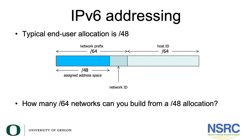What does a typical end-user allocation in IPv6 addressing look like? The typical end-user allocation is a /48. You have 128 bits for the IPv6 number, preserving 64 bits for the network prefix — as all addresses are /64 — and 64 bits for the host. So the question is: how many /64 networks can you build from a /48 allocation? It's the same binary mathematics from IPv4.